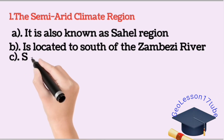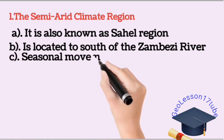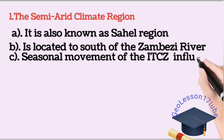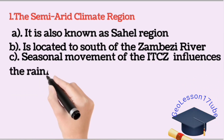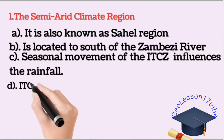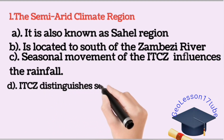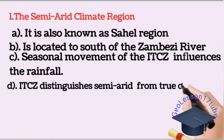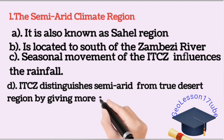The seasonal movement of ITCZ in this region influences rainfall. The level of rainfall in this region is too low.